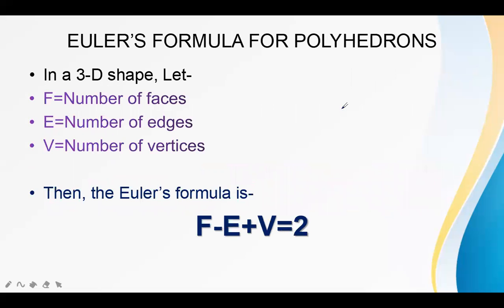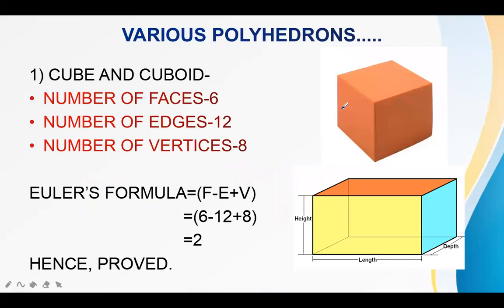There is a formula called Euler's formula that applies to polyhedrons. Euler says the number of faces minus the number of edges plus the number of vertices is always equal to 2. For a cube: it has 6 faces, 12 edges, and 8 vertices. So Euler's formula gives 6 minus 12 plus 8, which equals 2. This proves that the cube and cuboid are polyhedrons.